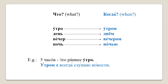Let's go through them together — please repeat after me: утром (in the morning), днем (in the afternoon), вечером (in the evening), ночью (at night). Notice the difference between '5 часов, это раннее утро' (5 o'clock, it's early morning) and 'Утром я всегда слушаю новости' (In the morning, I always listen to the news).